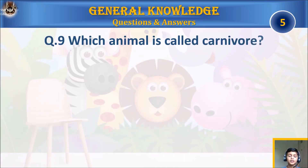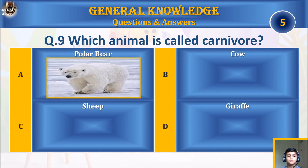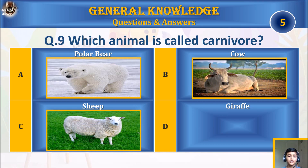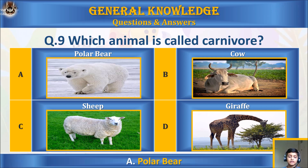Question nine: which animal is called a carnivore? A) polar bear, B) cow, C) sheep, or D) giraffe? Your time starts. The answer is A) polar bear.